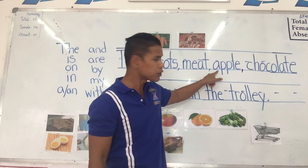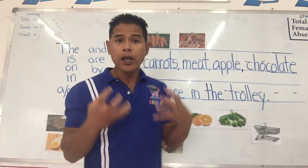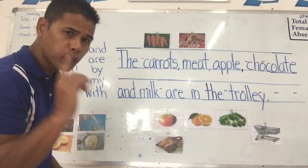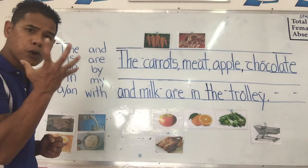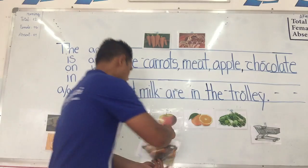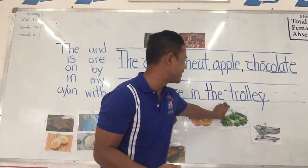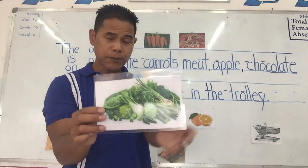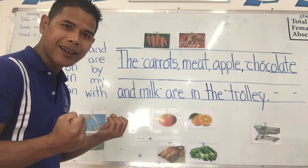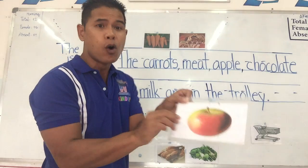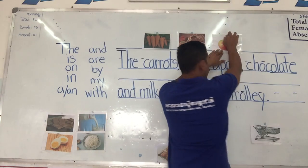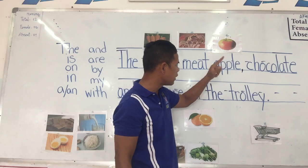Next one starts with the letter A. This one is a fruit — it grows on a tree. Can you find which fruit up here starts with the letter A and grows on a tree? Chicken is not a fruit. Vegetable — no. Which one is a fruit, grows on a tree, and starts with the letter A? Apple! Yes, it is apple. Apple is a fruit, it starts with the letter A, and it grows on a tree. A-P-P-L-E, apple.